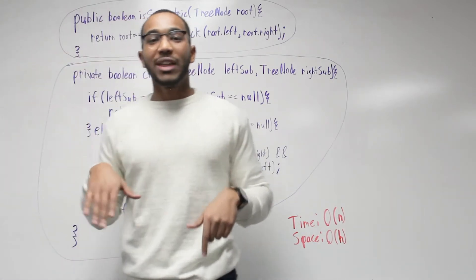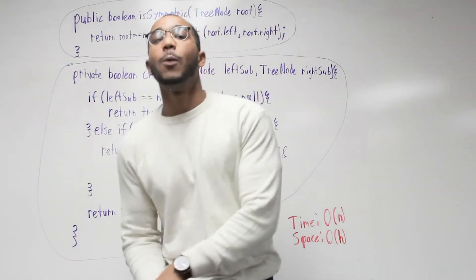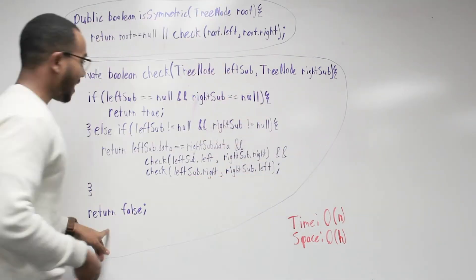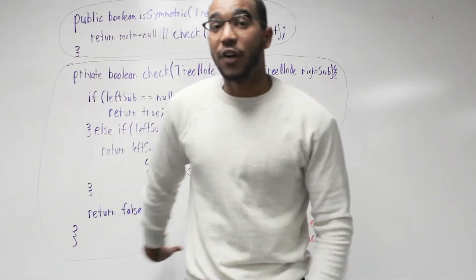First we check their values. If their values are the same, good, we're done with these nodes. Then we need to check to make sure that our left subtree's left is equivalent to our right subtree's right, and that our left subtree's right is equivalent to our right subtree's left. We enforce that, we continue our recursion, and we will bubble up the answer when we return.